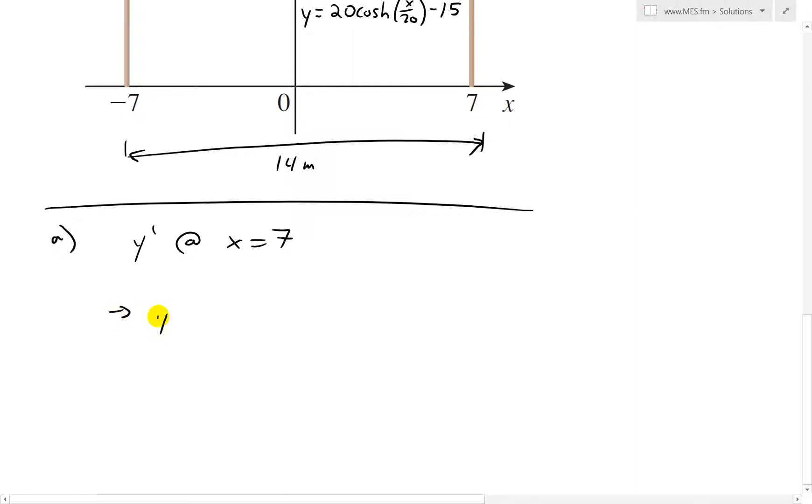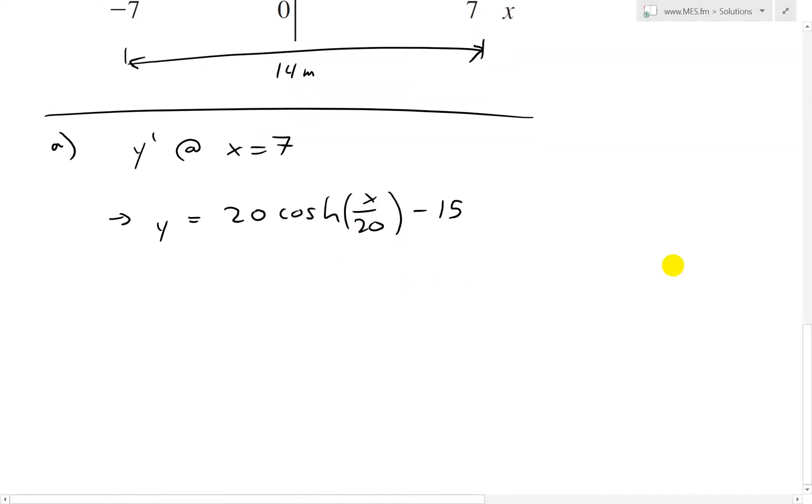So let's look at y first. So y is equal to 20 cosh x over 20 minus 15.